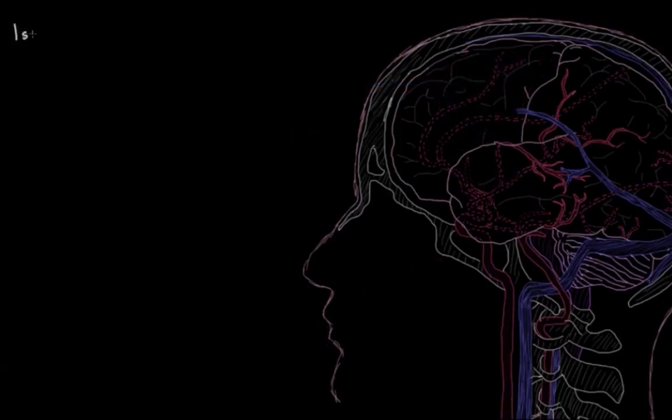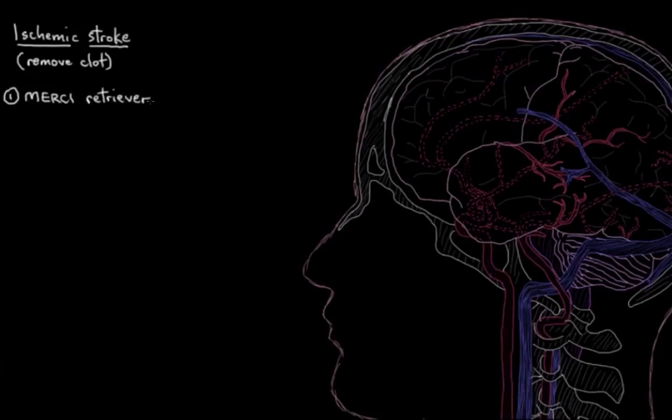Otherwise, if the surgeons are treating a patient with an ischemic stroke, they might be doing one of a few different but similar types of procedures, with the ultimate goal of removing the clot that caused the stroke. So one little device that they might use is called the MERCI Retriever. And this was actually the first ever little gadget that was approved for clot removal after ischemic stroke. So let's look at what MERCI stands for to get an idea of how it works. MERCI is an acronym. So it stands for Mechanical Embolus Removal in Cerebral Ischemia.